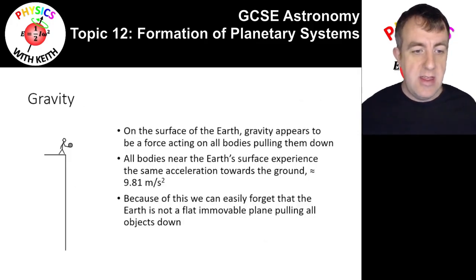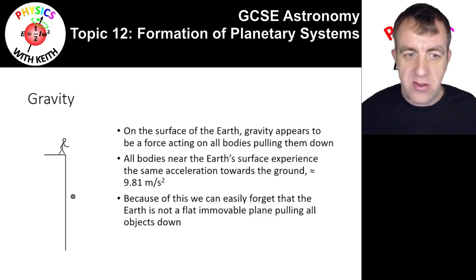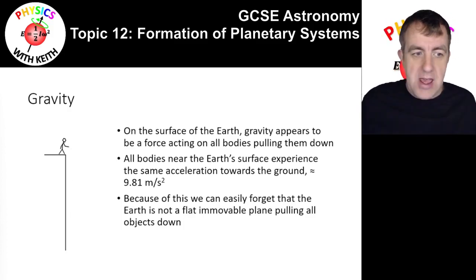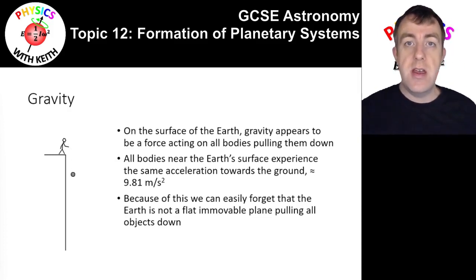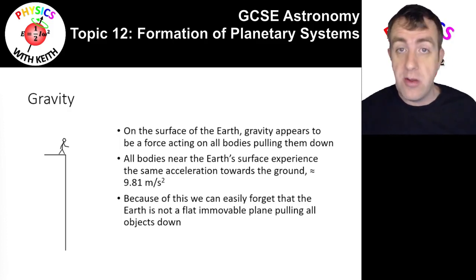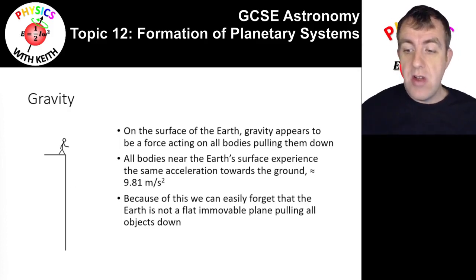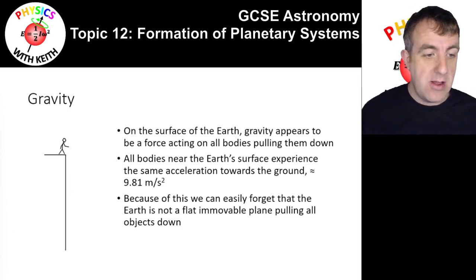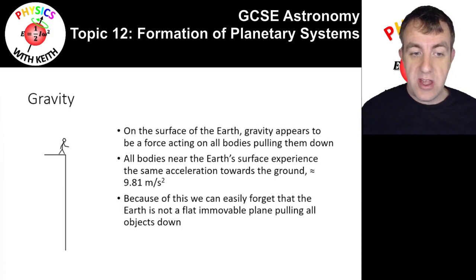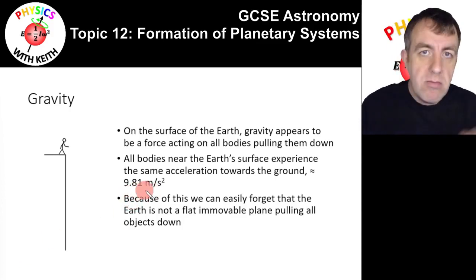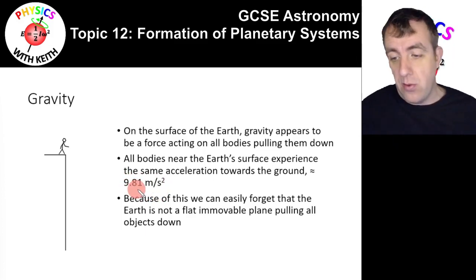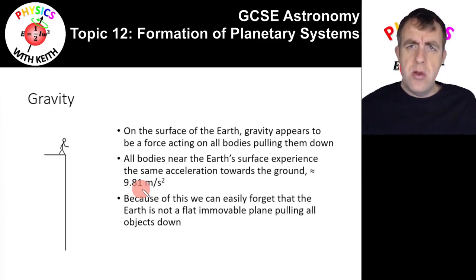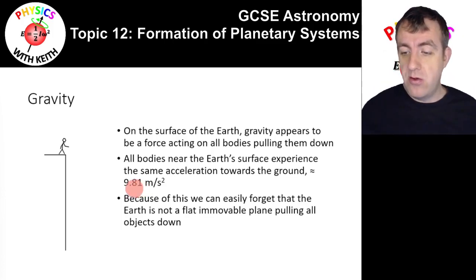We're starting with gravity — that mysterious force that causes things to fall, or so it seems on Earth, a force that draws things towards the centre of the planet. The acceleration due to gravity is 9.81 metres per second squared on the surface of the Earth. That means all bodies will accelerate on the surface of the Earth in freefall at that rate. If you go further away from the centre of the Earth, that amount would drop.